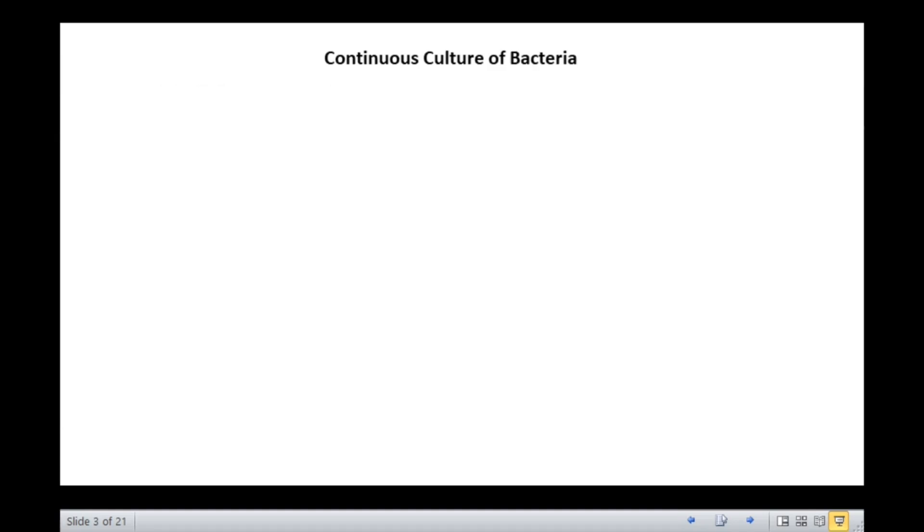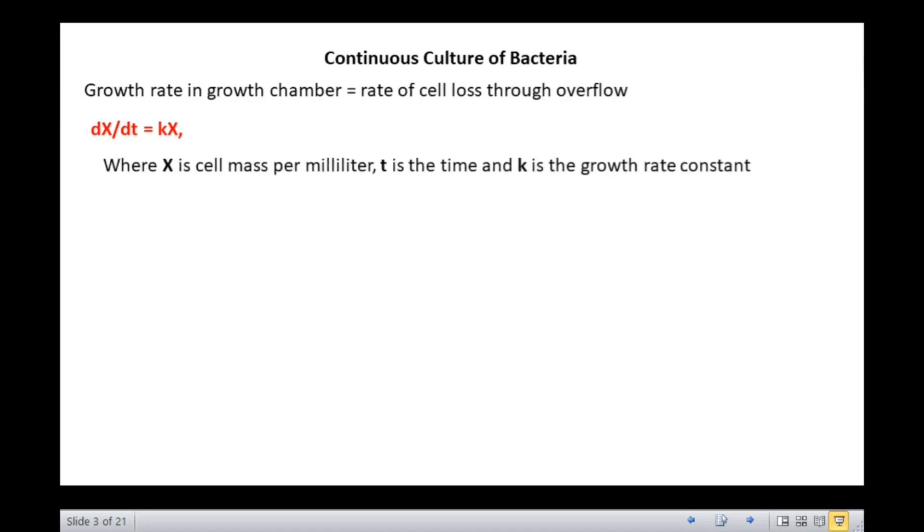The relationship between growth rate and rate of cell loss can be given as growth rate in growth chamber equals rate of cell loss through overflow. Growth rate of bacterial cells can be described as dx/dt equals kx, where x is cell mass per milliliter, t is time, and k is the growth rate constant.